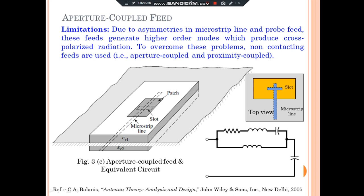In microstrip and probe feed techniques, there are some limitations generated due to the asymmetry that exists in both feed lines, which produce higher-order modes causing cross-polarization radiation. To overcome the problem of cross-polarization and higher-order modes, the non-contacting feeds can be used, which are known as aperture-coupled and proximity-coupled feed.